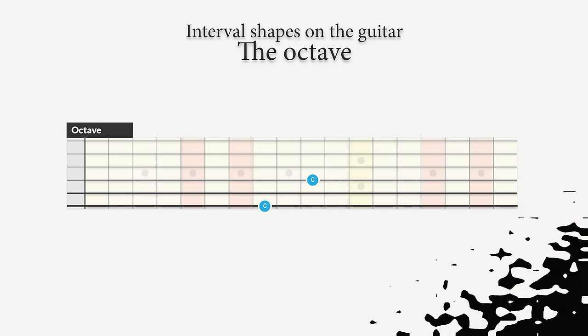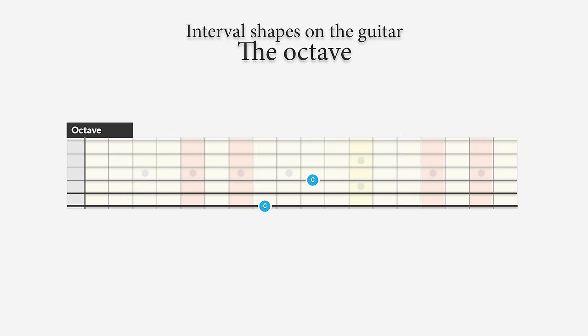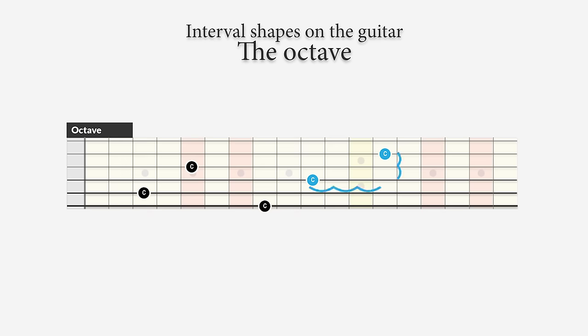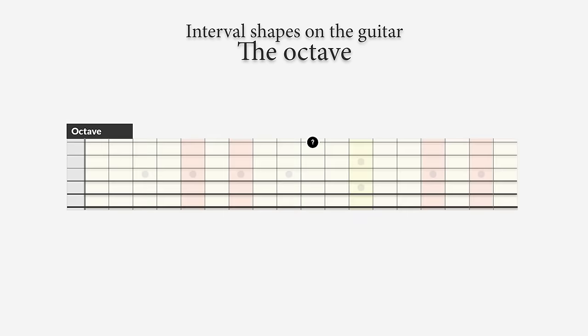The easiest interval to learn on the neck of the guitar is the octave. Starting on the sixth string with the note C, you find the octave two frets up and two strings up. Do exactly the same when you start with a note on the fifth string — two frets up, two strings up. But choosing a note on the fourth string is different: you go up three frets and two strings. With this trick it's also very easy to find the names of the notes on the guitar.